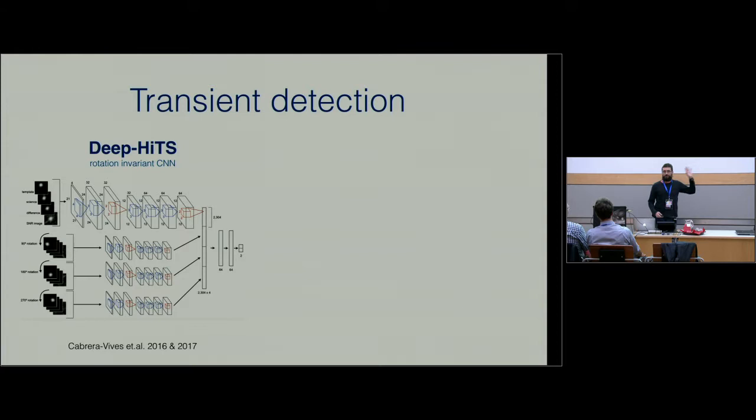We first ran a random forest. Then in 2016, we created a convolutional neural network. It was a very shallow convolutional neural network that we published in 2016 for transient detection. In 2017, we had this deeper rotation invariant convolutional neural network and this improved amazingly the results in terms of how many false positives and false negatives we were getting.